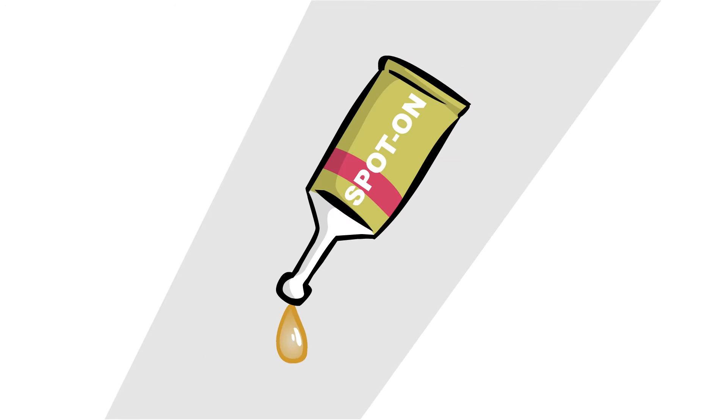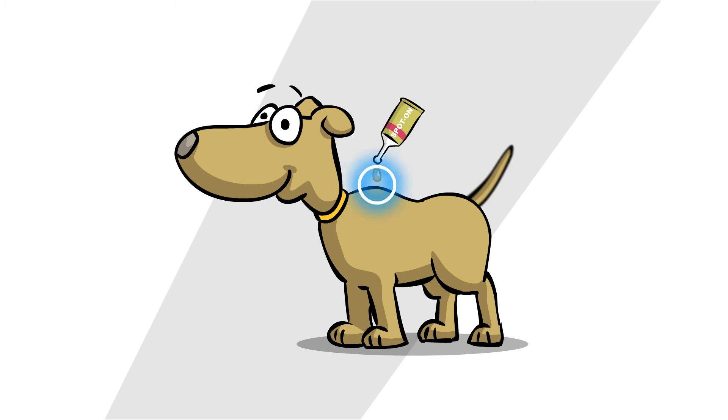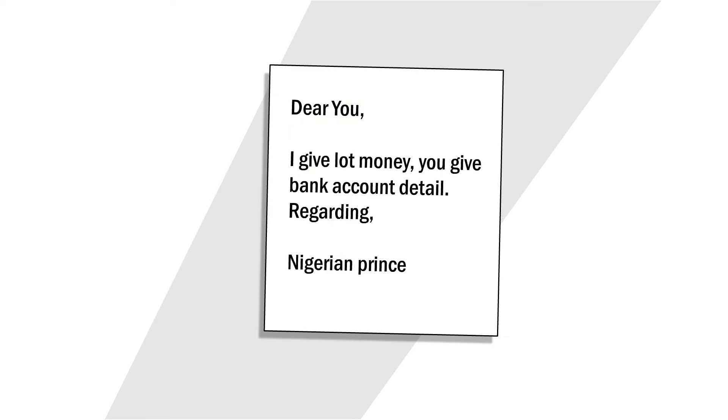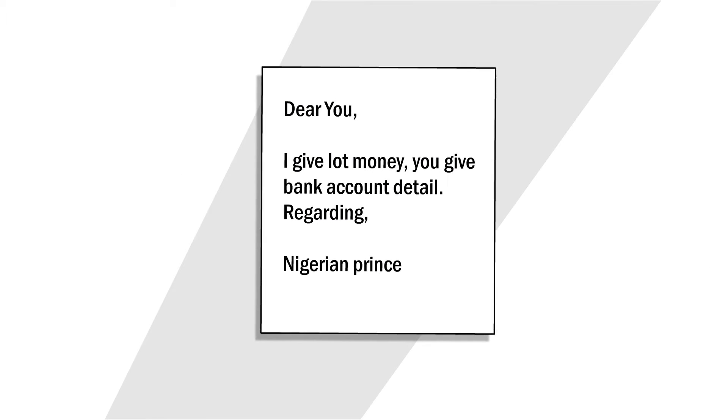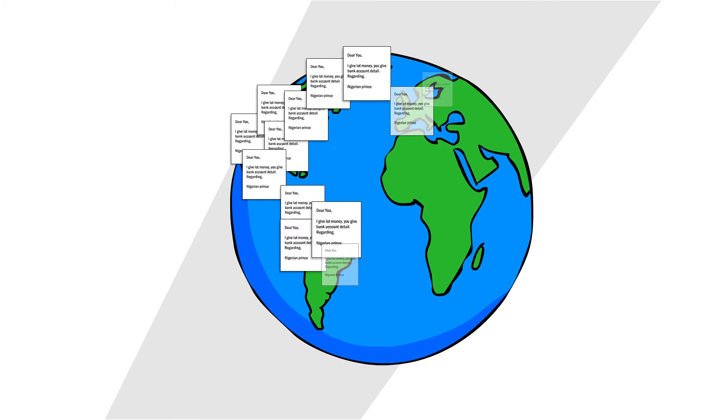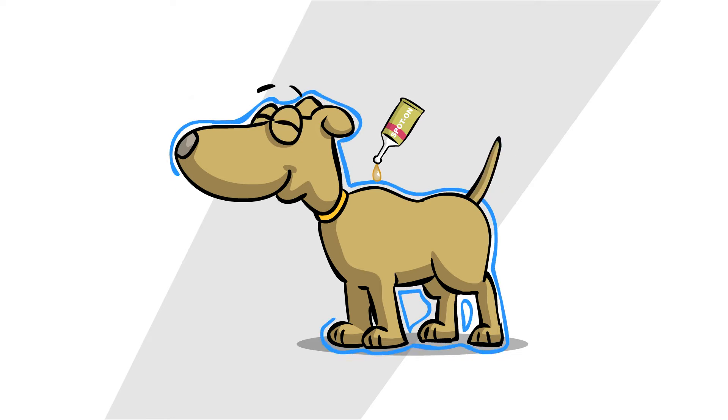Spot-ons are liquid substances applied to a small area of the skin and much like the totally legit email of the generous Nigerian prince spread all over the globe, the active ingredient spreads over the entire surface of the body.